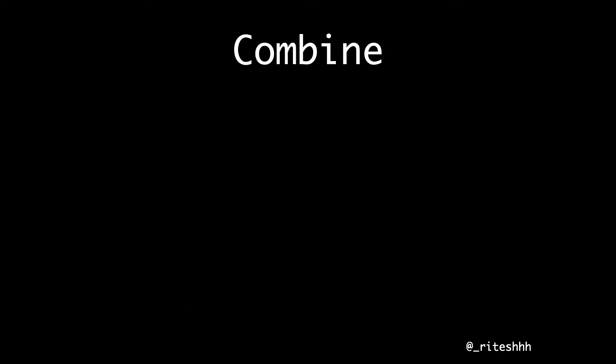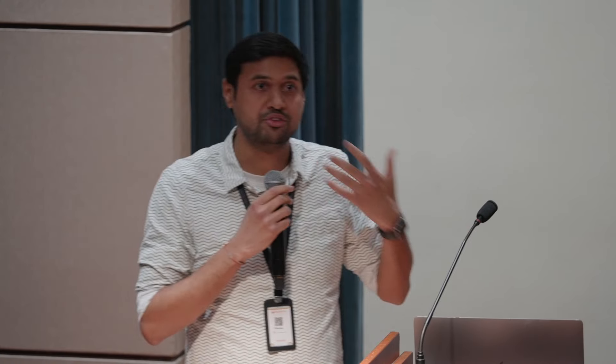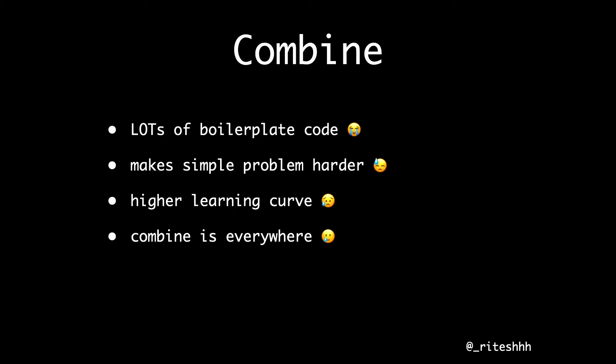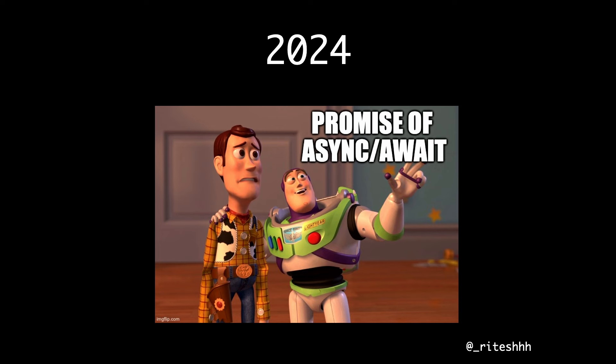So if Combine is so great, does async/await even stand a chance? Why give it a shot? Because Combine might have some drawbacks. If you look at Combine code, it has a lot of boilerplate. When it makes a complex problem simpler, it tends to make simple problems a little harder. That leads to a higher learning curve. And when you work with Combine, you know you're working with Combine — your code is filled with publishers, subscribers, and operators everywhere. And that's why we're here now, where we want to see the promise of async/await.